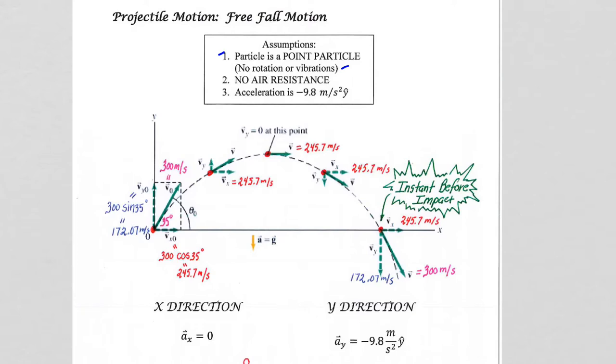Number two goes along with this point particle approximation in that even if we were to consider air in the presence of this object, the point particle has no cross-sectional area to allow air resistance to have an effect. So point particle, no air resistance.